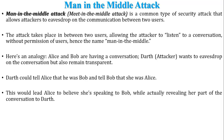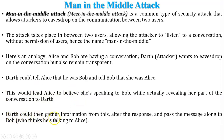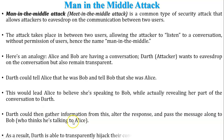Whenever Bob replies to Alice's message, it is captured by Darth, modified by Darth, and then sent to Alice — so Alice and Bob have no idea there is an attack occurring in between their communication. Darth gathers information from the conversation, alters the responses, and passes messages along to Bob, who thinks he is talking to Alice. As a result, Darth is able to transparently hijack their conversation. This is one scenario of the man-in-the-middle attack.